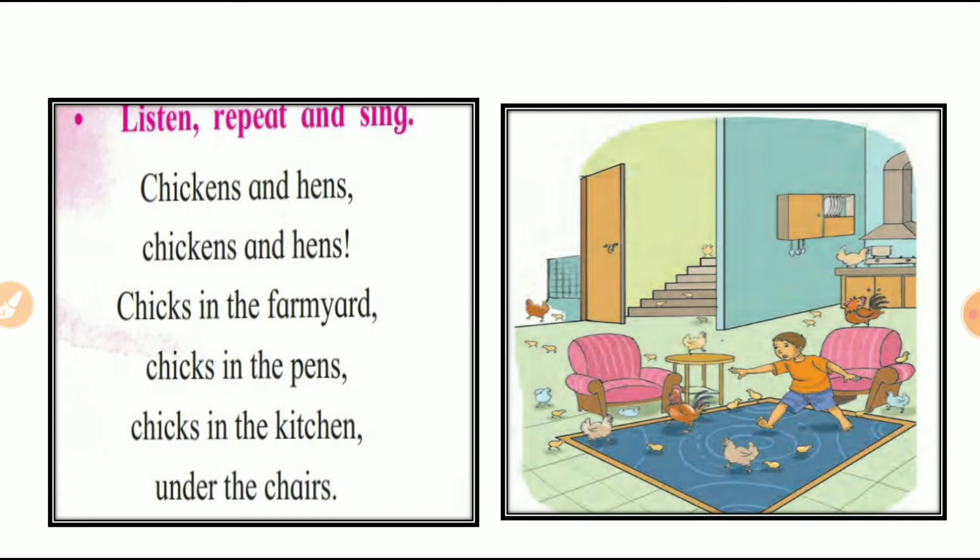Chicks in the farm yard. Jaysse ki pahla picture meh dikha ya. Chicks kaha jate hai? Farm yard. Means, khet meh jate hai. Chicks in the pen. Or, pen meh bhi chalye jate hai. Chicks in the kitchen. Kitchen meh bhi gus jate hai. Jabhi hamaara kitchen ega ghar meh chicken raha enghe toh. To, woha woha phe bhi chalye jate hai.